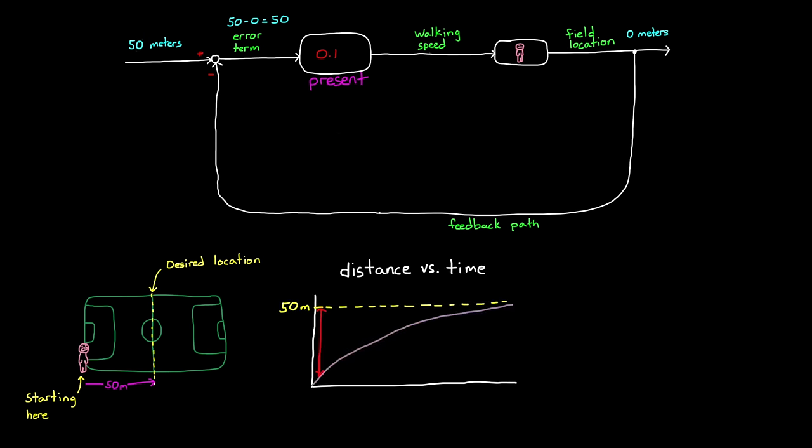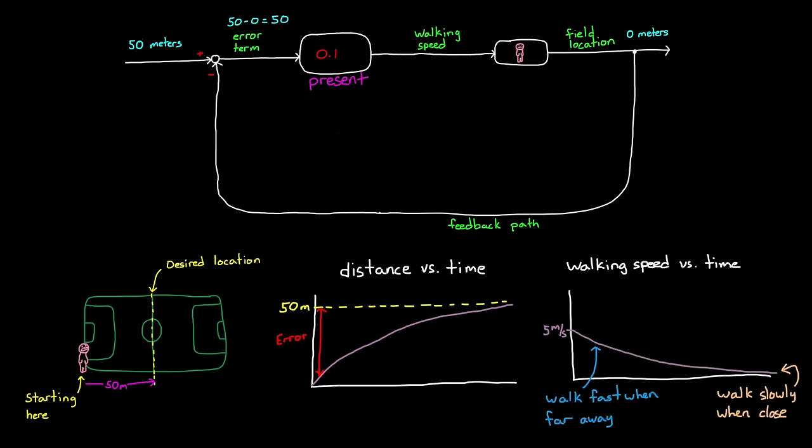With a proportional controller like this, we start reducing the error quickly since we're far away, and then gradually slow down as we get closer and closer to our goal. In this way, we would eventually and asymptotically reach the half field line, at which time the error would be 0, and our proportional controller would multiply that by 0.1, which would generate a walking speed of 0. If we wanted to adjust the amount of time it took us to get to the goal, we could increase or decrease the multiplier term. Regardless of the gain value chosen, this type of controller will eventually cause us to stop right on the goal line. So, this proportional controller seems great. Well, let's try it again on a different system and see if it performs the same way.